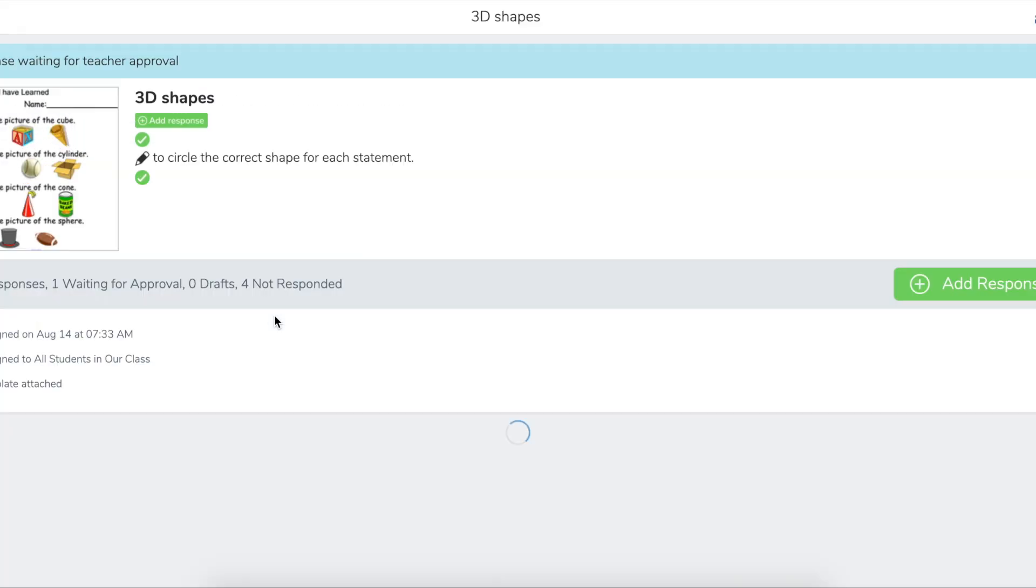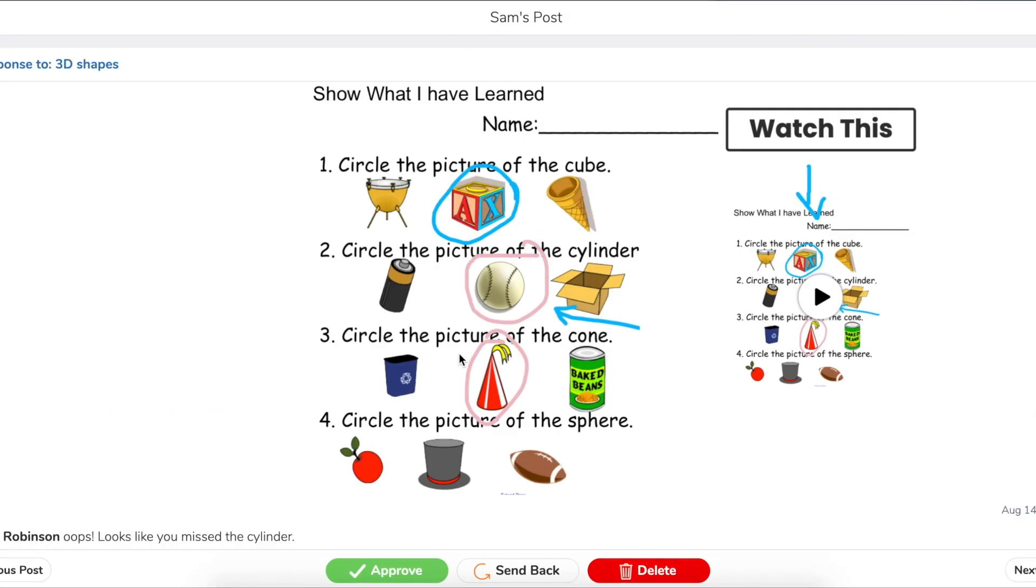You'll still need to go back in and then do your final approval, or if you have the paid version of Seesaw you could send it back to them. Either way, they're going to see your updates and they're going to know that they need to go in and make some changes.